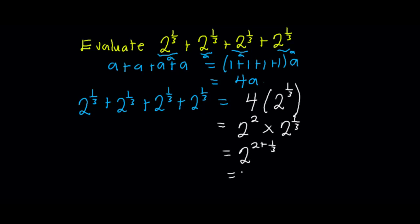And this is the same as 2 exponent... The LCM is 3. This gives me 6 plus 1, and so I'll end up getting 2^(7/3).